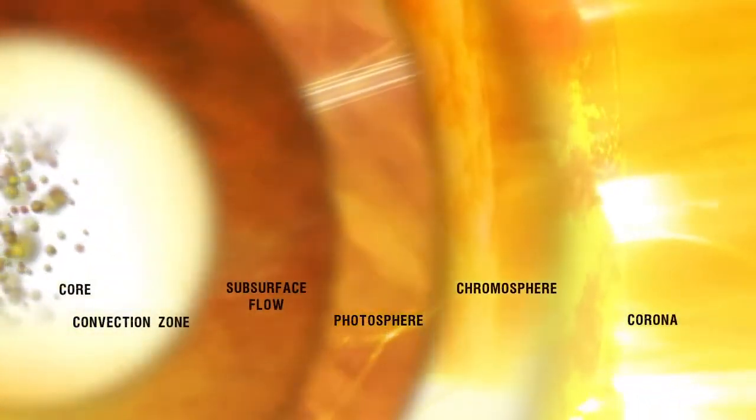This layer where the temperature mysteriously begins to rise again is called the chromosphere. It lies in an interface region between the photosphere and the corona, the hottest and outermost region of the Sun's atmosphere.